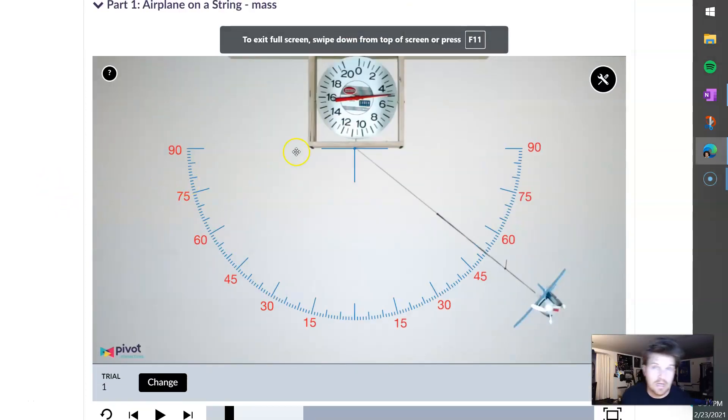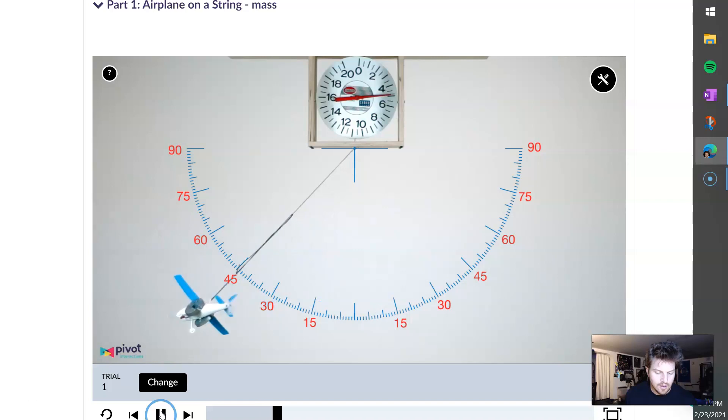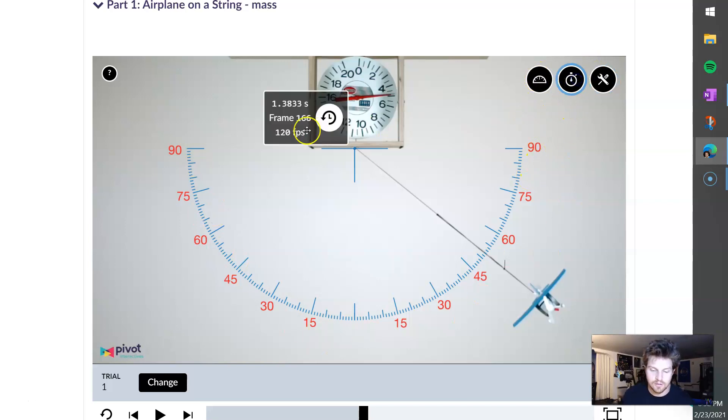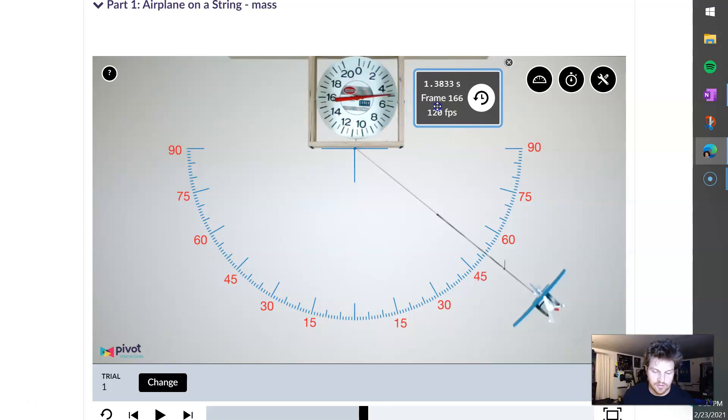In this lab we have a plane flying around in a circle, and we have some different things we can measure angles with. You can always get the tools up here in the top right, and we have a protractor which you see on the screen already, and then I can also pull up a stopwatch to actually look and see what the time is.